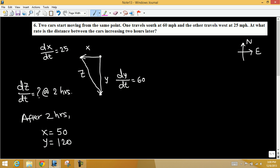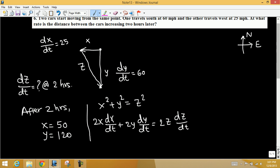We need to find the rate of change of this distance z. We have three variables: x, y, and z. This is a right triangle, so we write the relationship between x, y, and z from the Pythagorean theorem: x² + y² = z². Differentiate both sides with respect to time, so we get 2x(dx/dt) + 2y(dy/dt) = 2z(dz/dt).